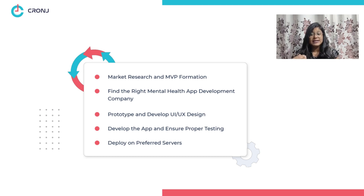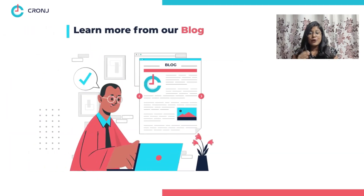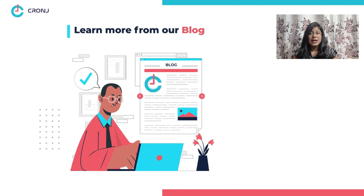Stage two: search for the right mental health app development company and check their service rates and the assistance they will provide. Stage three: undergo rapid prototyping and create a user-friendly UI/UX design that suits patients and delivers convenience to care providers. Stage four: develop the app based on the MVP formed in the first stage and ensure proper testing. Stage five: deploy the app on your preferred app store or server with proper documentation.